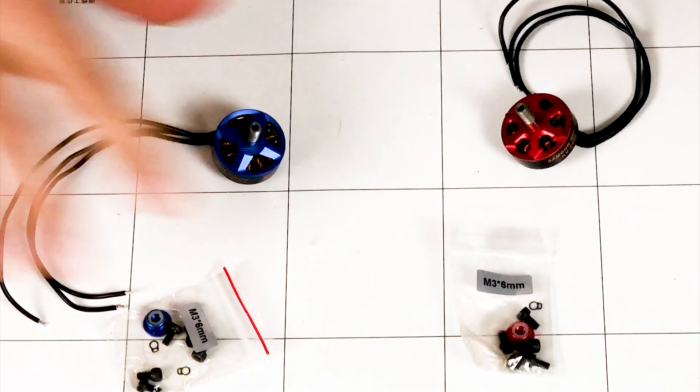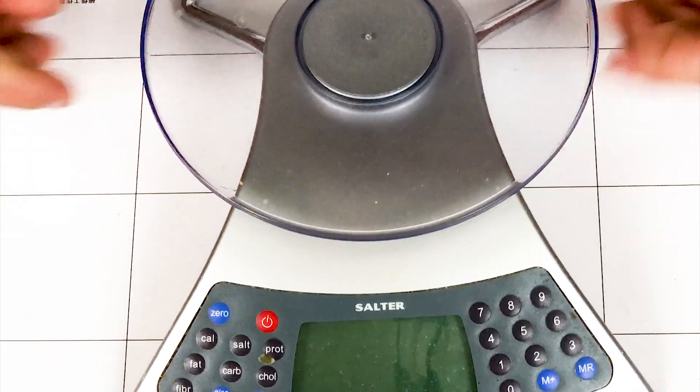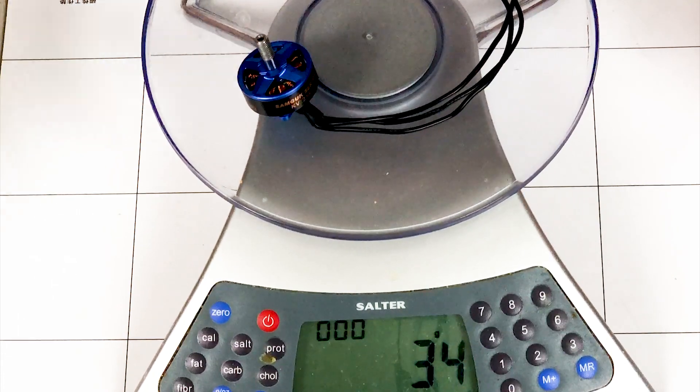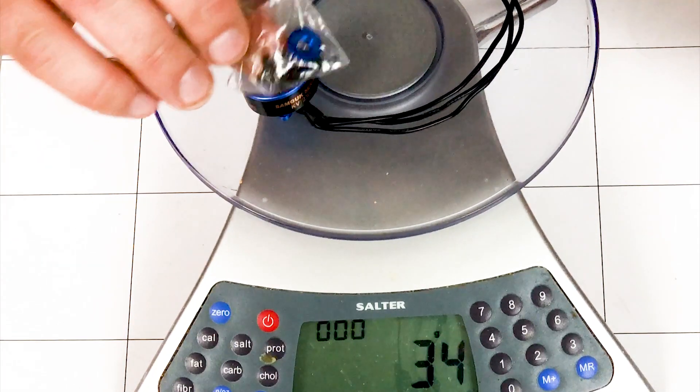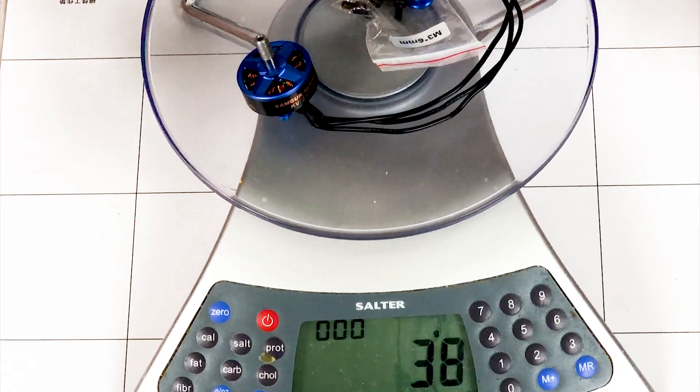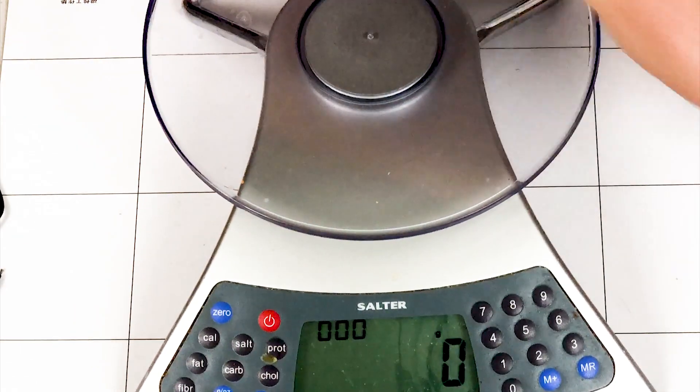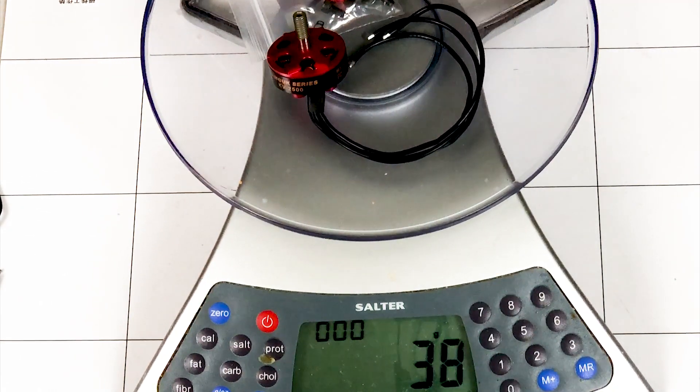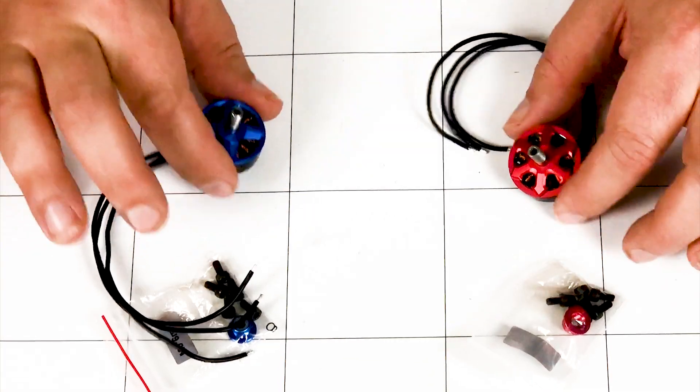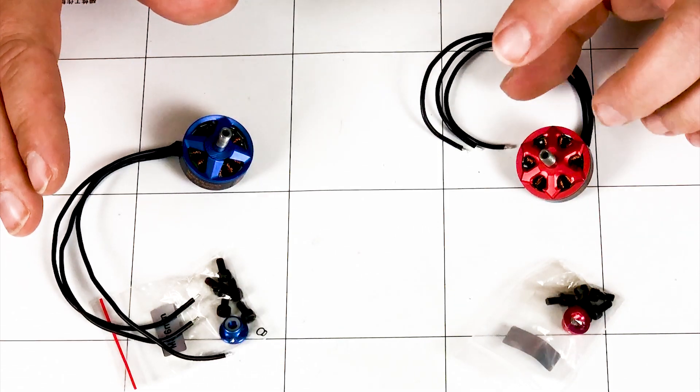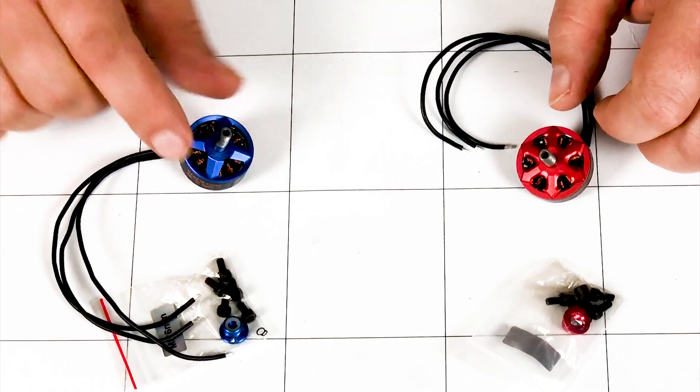Now I'm sure you're going to want to know weights on these. So let's move these out of the way for now. Let's bring the scale out. Okay, so the Wii motor 35 grams and we'll throw on the pack because you're going to have the mounting screws, you're going to have the motor washer on there, you're going to have all that on there too. So let's throw that on, we're at 38 grams. And for the Shoe with its little pack of goodies, we're at 38 grams. So as far as weight goes, they weigh about the same.